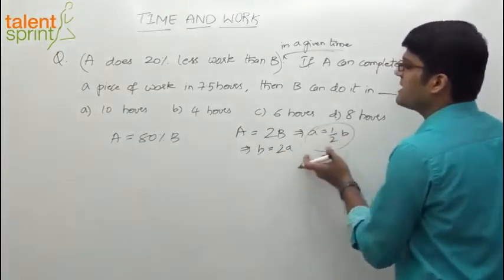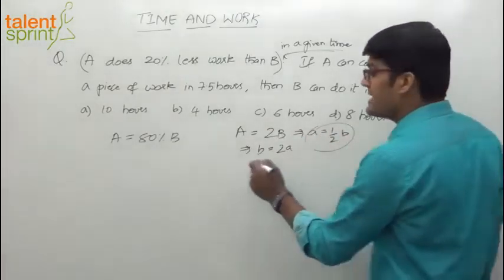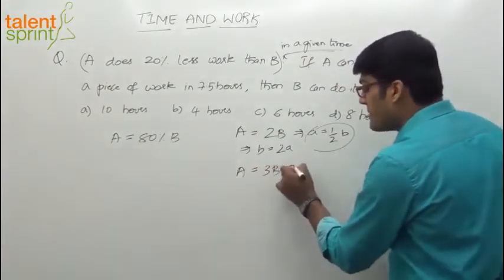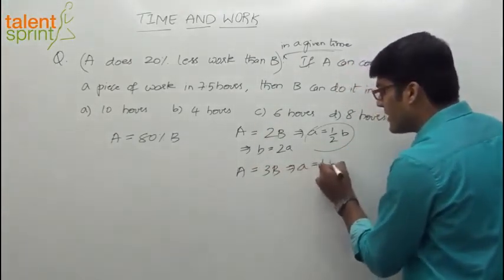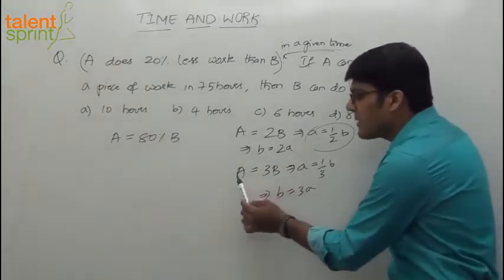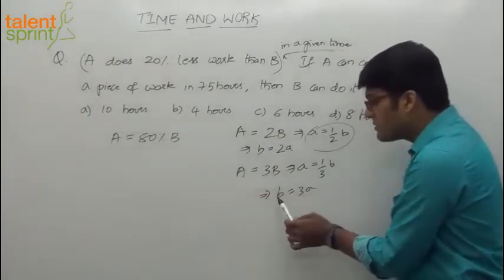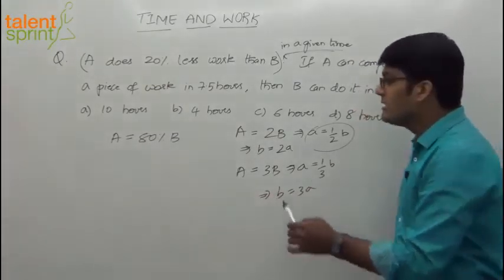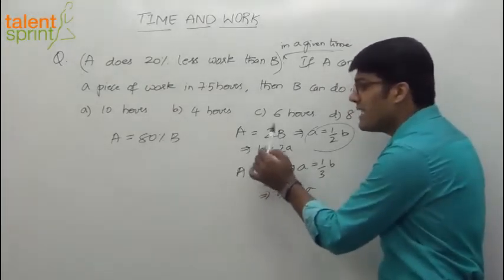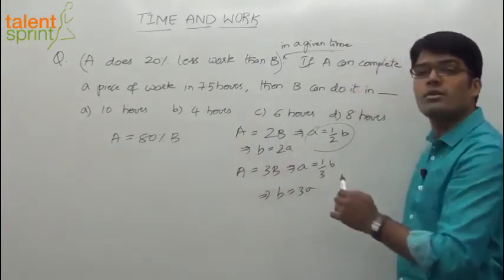Actually this is the case, which implies B is equal to 2A. Let's say A's capacity is thrice B's capacity. A is equal to 3B implies time required by A will be one third of time required by B, which means B is equal to 3A. So the idea is, in terms of capacity A is equal to 3B, in terms of time B will be equal to 3A. In terms of capacity A is equal to 2B, then in terms of time B will be equal to 2A.